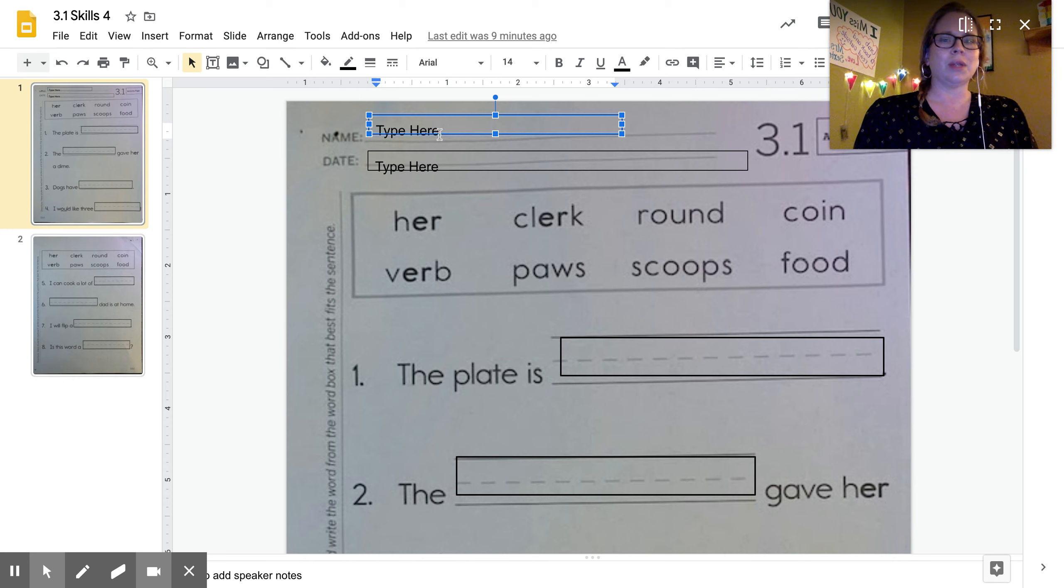Right here it says type here. I've put that so that you know. I'm going to just hit my delete or my backspace and I'm going to type my name there so I know that this is my paper. Mrs. Sexton.